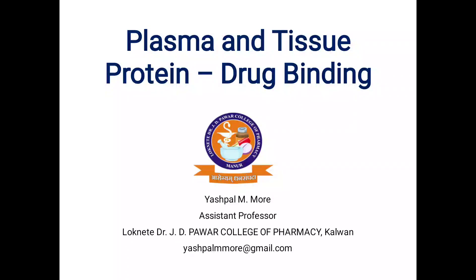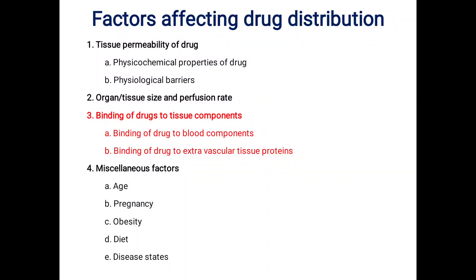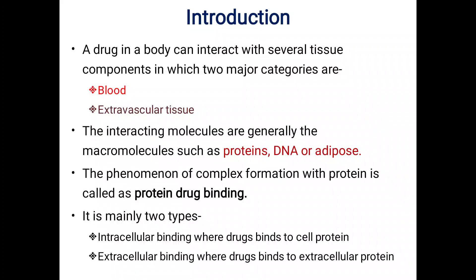Hello students, today I am going to talk about kinetics of protein drug binding. When a drug enters the body, it can interact with several tissue components, of which the two major categories are blood and extravascular tissues. The interacting molecules are generally macromolecules such as proteins, DNA, or adipocytes. The phenomenon of complex formation with protein is called protein drug binding, and it is mainly of two types: intracellular binding, where drug binds to cell protein, and extracellular binding, where drug binds to extracellular protein.